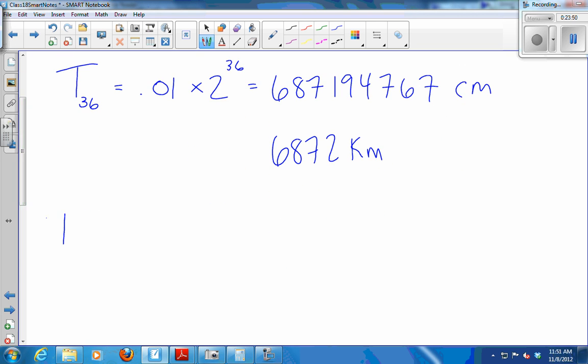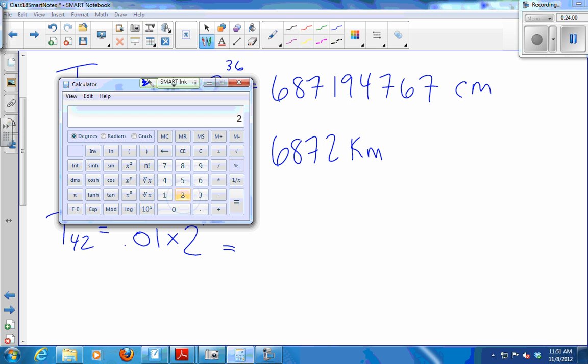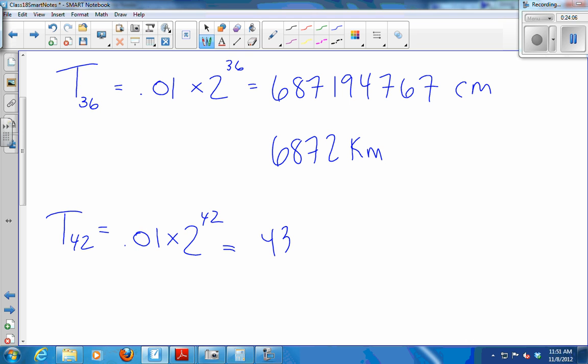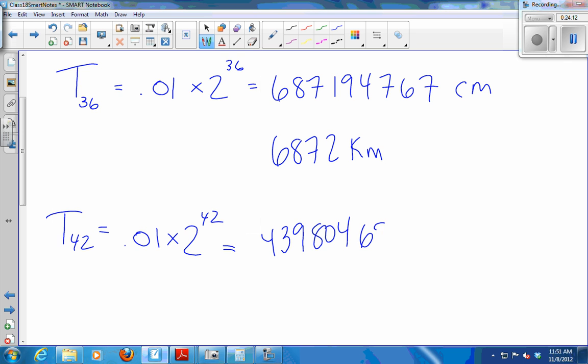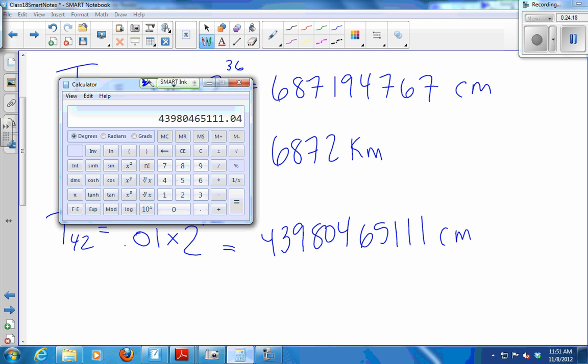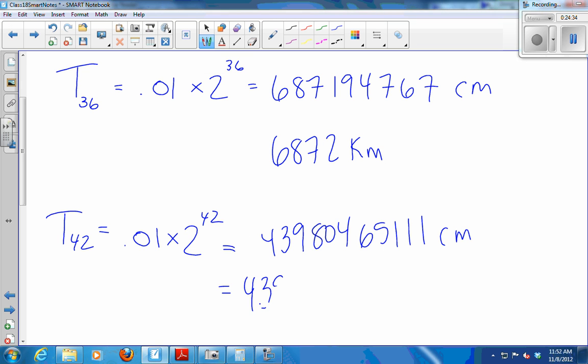I think that 41, 42 is right. Let's check T42. 0.01 times 2 to the 42. 2 to the 42 times 0.01. 43,980,465,111 centimeters. To convert it to kilometers, I go to meters and then kilometers. So to get meters, divide by 100. To get kilometers, divide that by 1,000. So I get 439,804 kilometers. Divide by T, you get to position of 41.